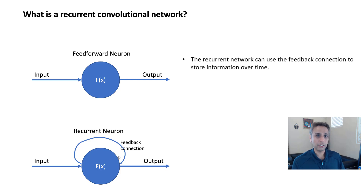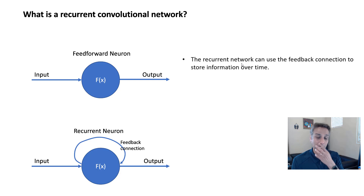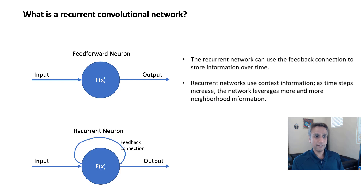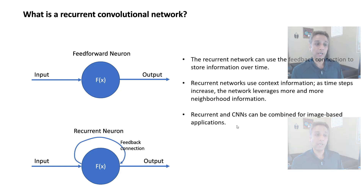The recurrent network uses this feedback connection to store information over time. If my time steps equal five, that means it sees the data for five time steps — within the same neuron, it has information about five time steps. This is why recurrent networks are very useful for time series type analysis. They use context information as time steps increase, and the network leverages more and more neighborhood information. Recurrent and convolutional neural networks can be combined in image-based applications — the network evolves over time even though the input is static.